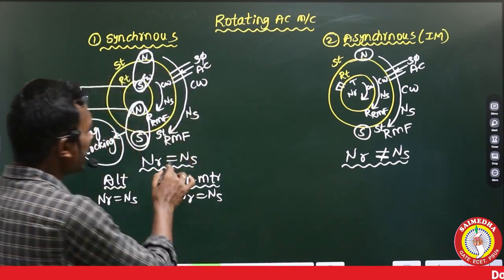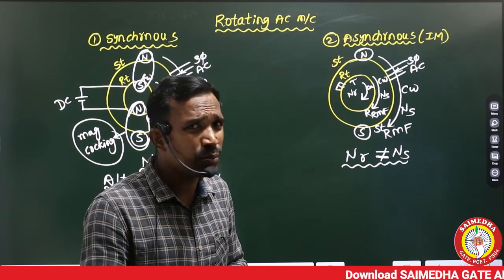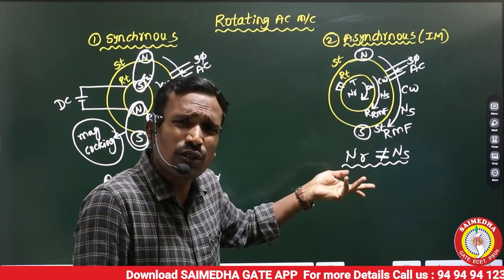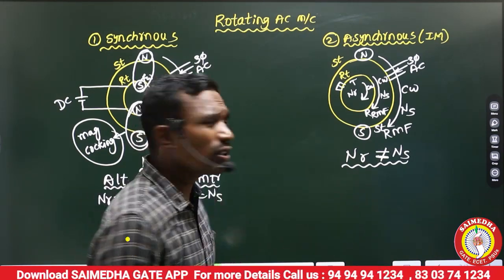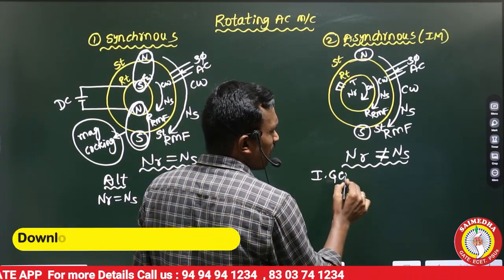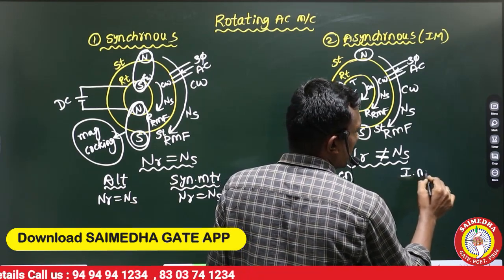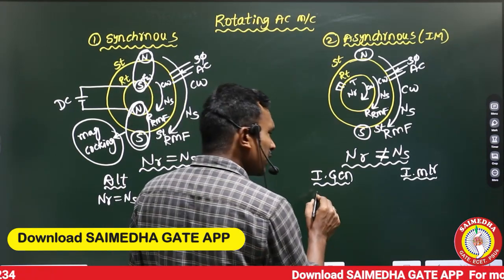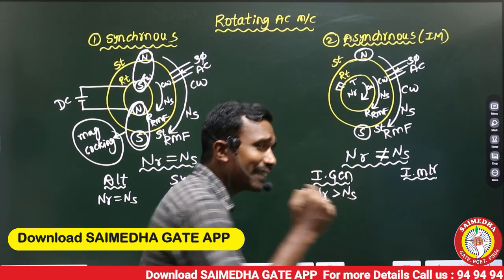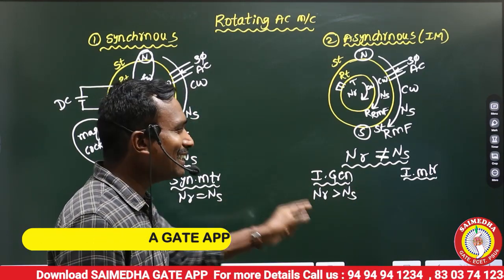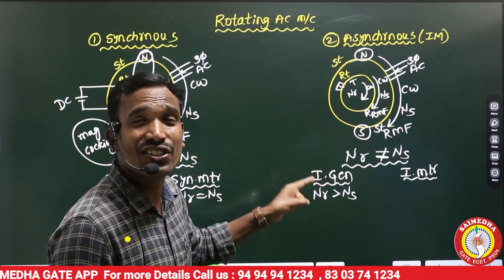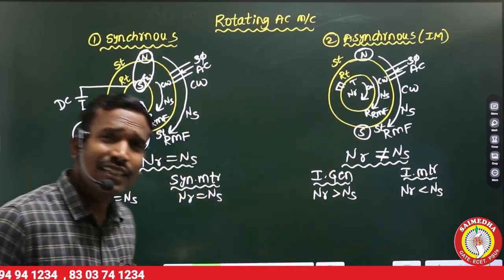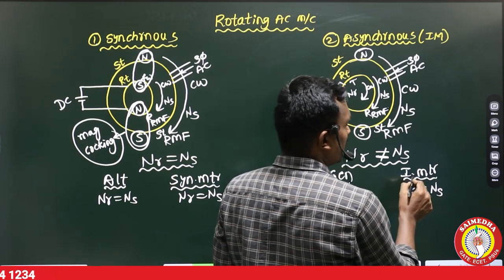Not equal means either less or more — we have two modes of operation. One is called induction generator and the other is called induction motor. In the induction generator, the rotor speed is greater than the synchronous speed. In the induction motor, the rotor speed is less than the synchronous speed. These are the main differences.